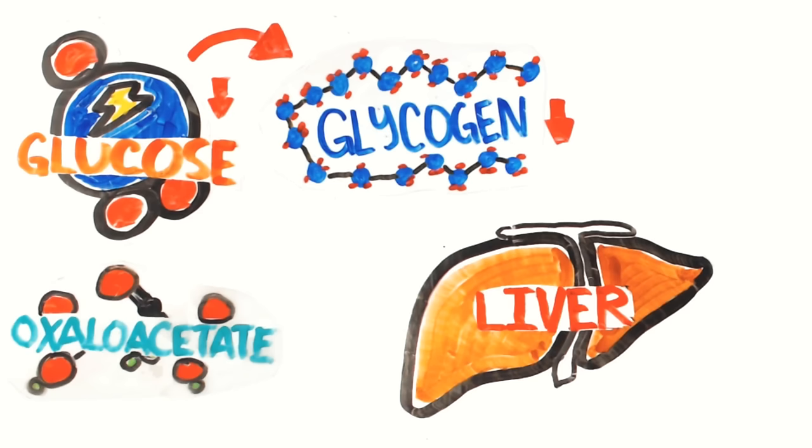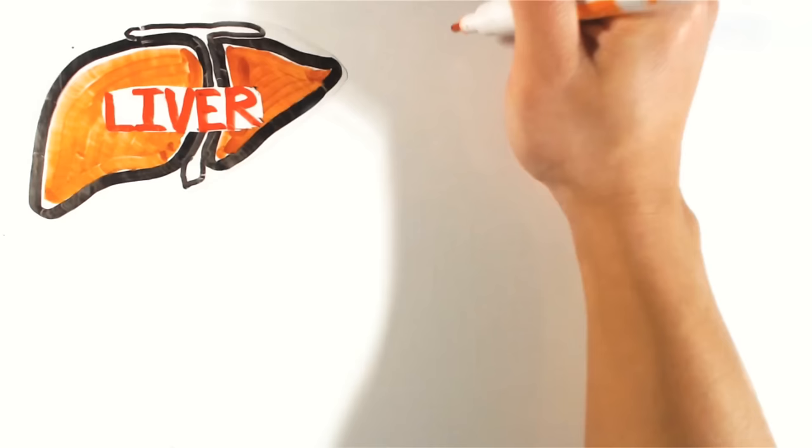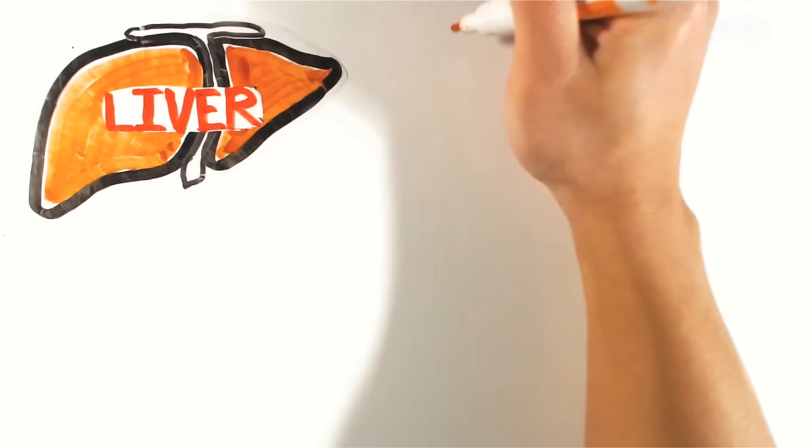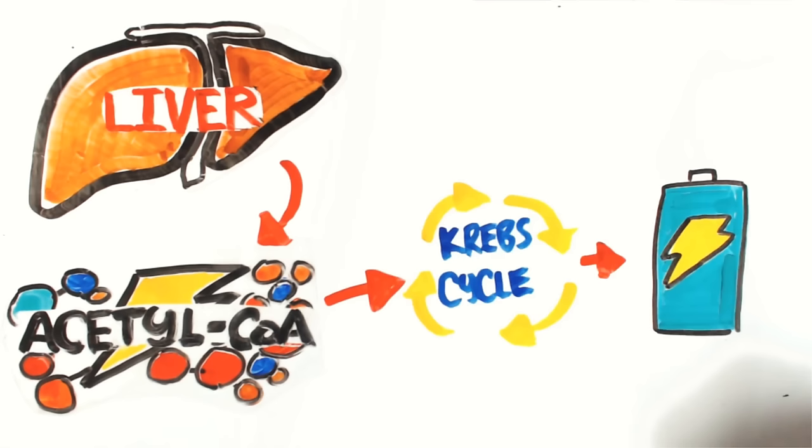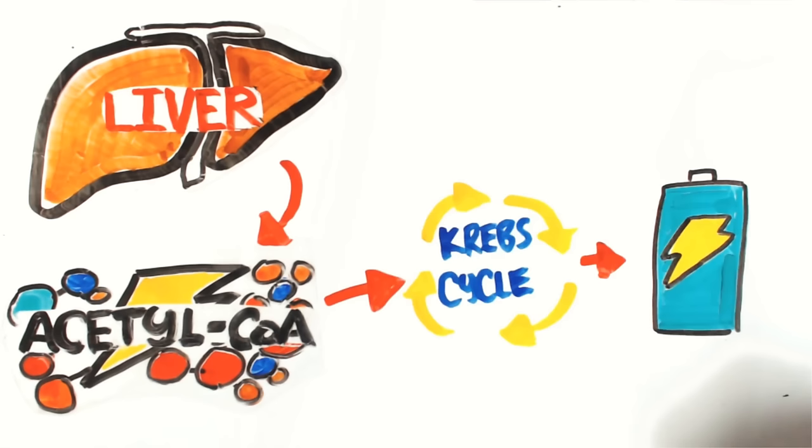At the same time this is happening, your body's breaking down your fat into free fatty acids and sending it to your liver to metabolize another important substance known as acetyl-CoA. Acetyl-CoA is then placed into the Krebs cycle in the liver cells to produce energy. But it can't do that right now. Remember that oxaloacetate that was being broken down into glucose? Well, oxaloacetate is also needed for the Krebs cycle to function.